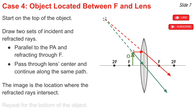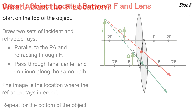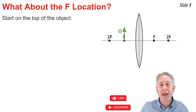I repeat the process for the bottom of the object. Since the object is resting upon the principal axis, the image is also on the principal axis. The complete image can be drawn from the principal axis up to this intersection point, shown in green and labeled I on the diagram.